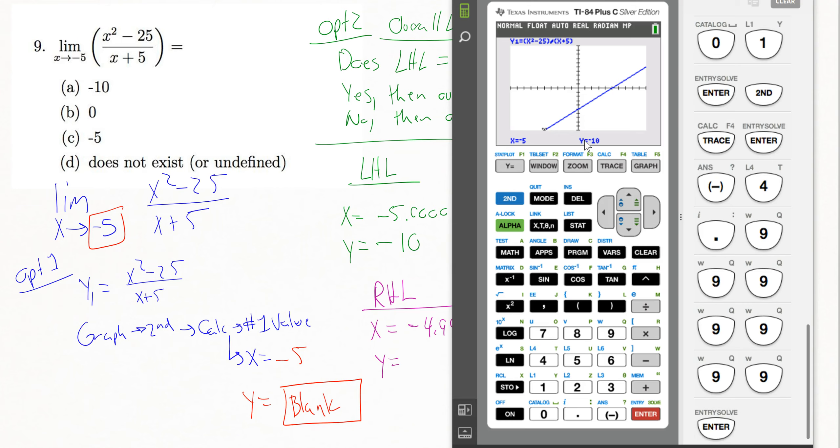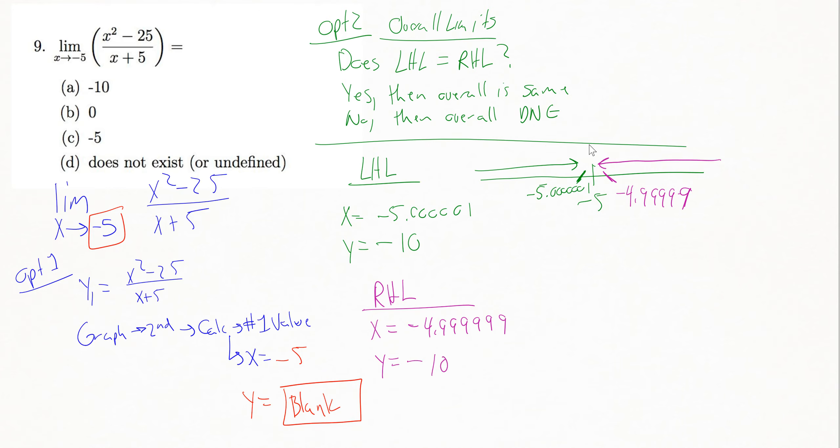We see again, we get a y value out of there of negative 10. So what I can conclude now is that my left-hand limit and my right-hand limit were equal. That's going to tell me that my overall limit is negative 10, which was answer A.